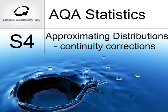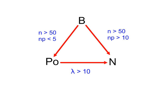Approximating distributions: continuity corrections. The binomial and Poisson distributions are discrete distributions where we typically count things.